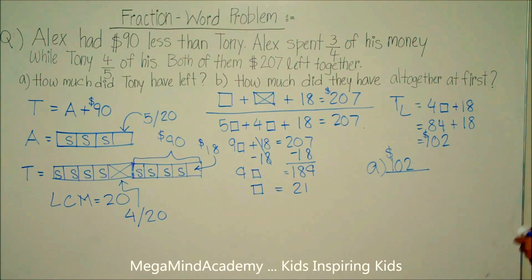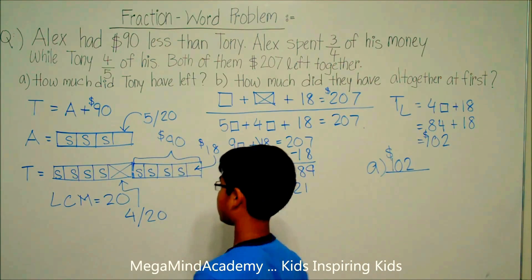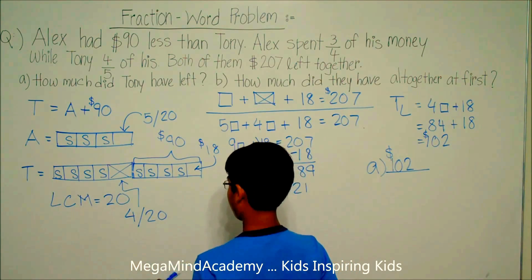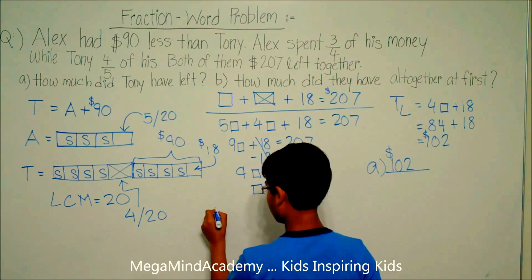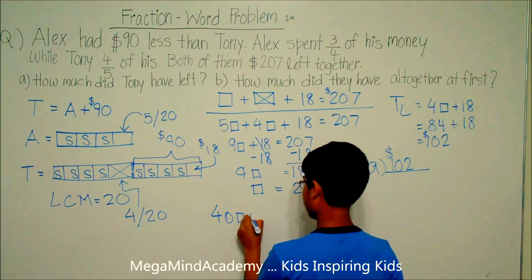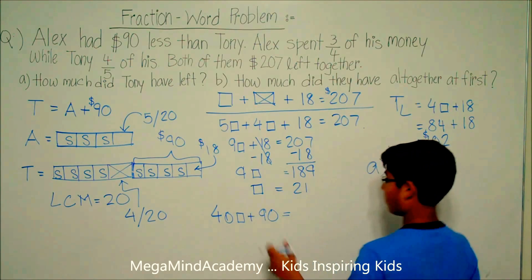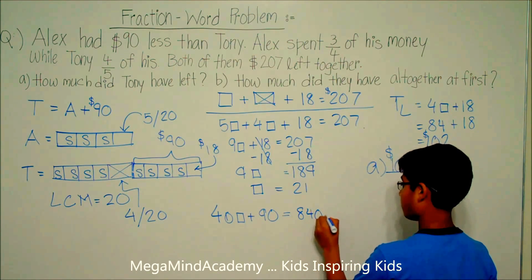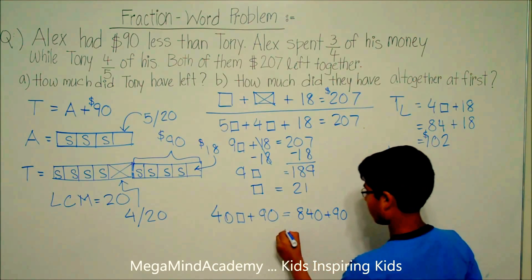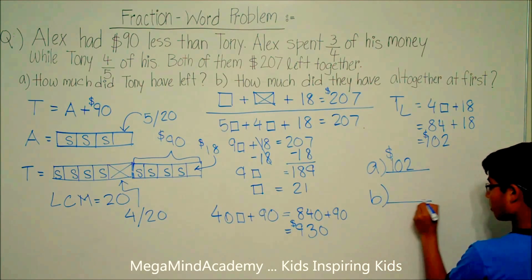Now let's solve question B: How much did they have altogether at first? We know that Alex had 20 units, and Tony also had 20 units, so together that's 40 units plus $90. 40 times $21 equals $840, plus $90, equals $930. So the answer to question B is $930.